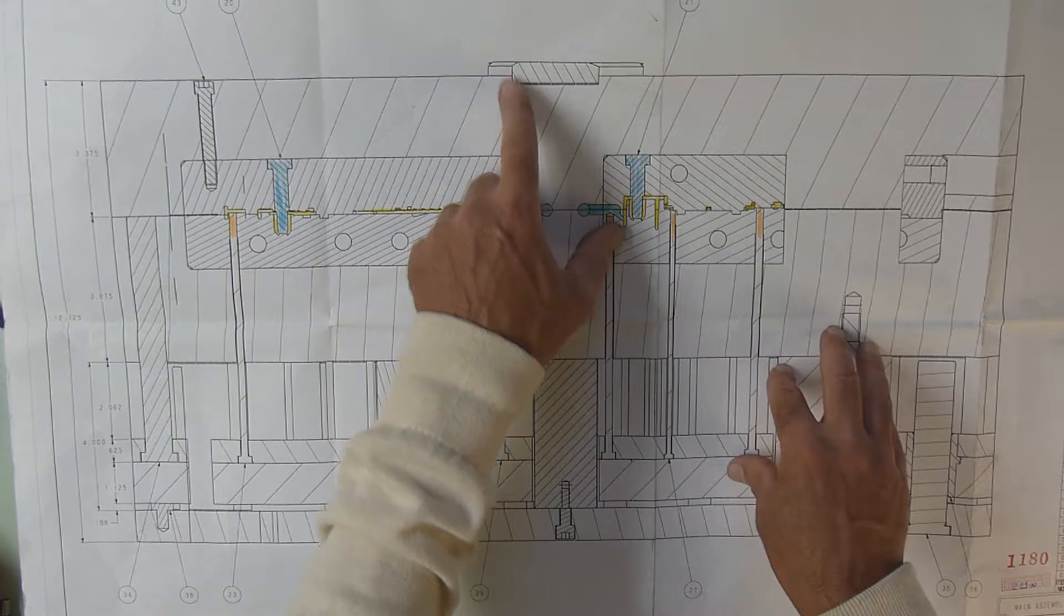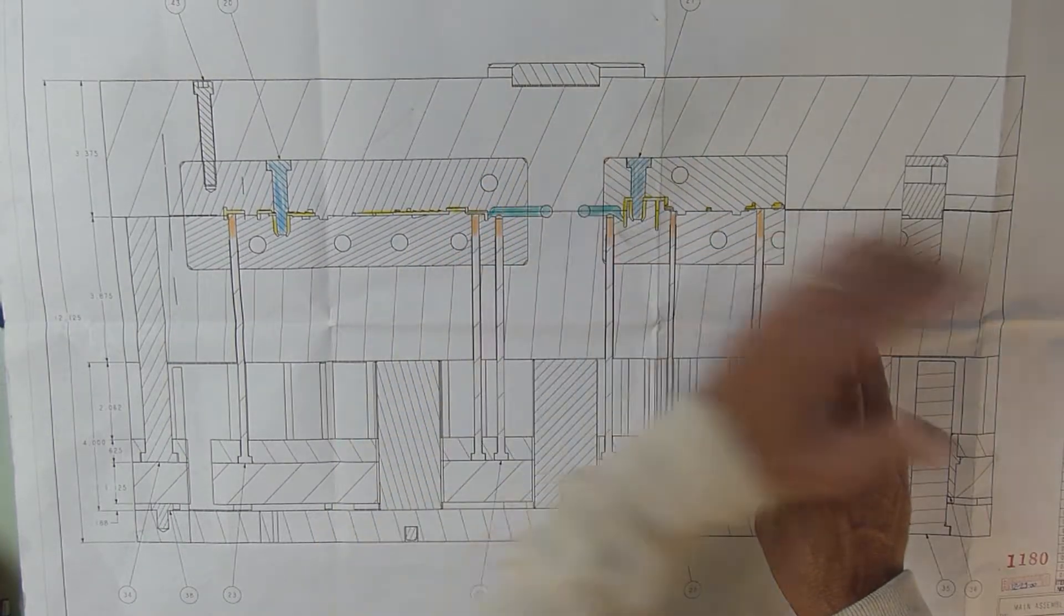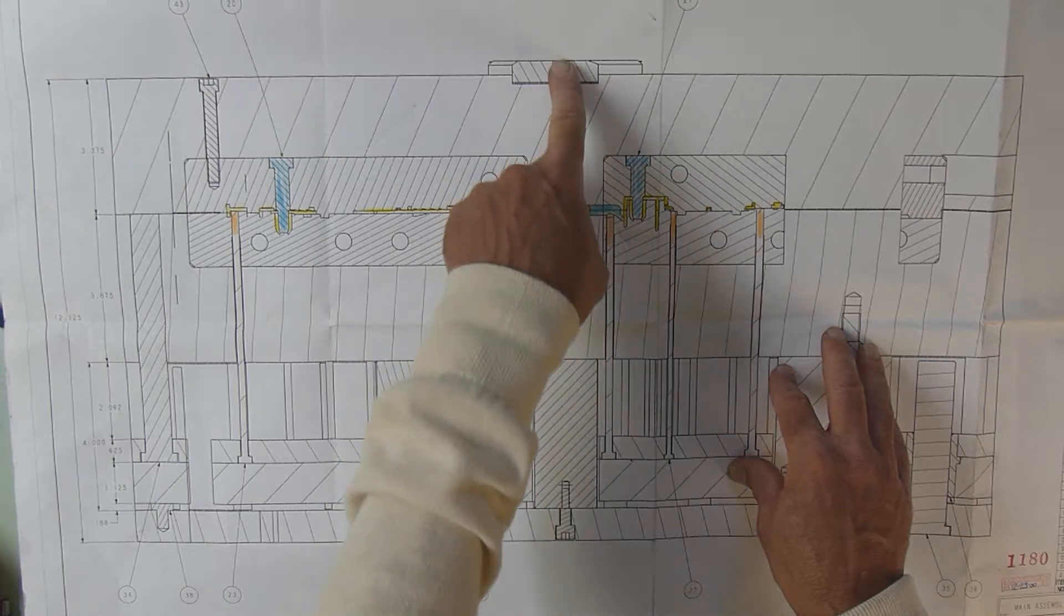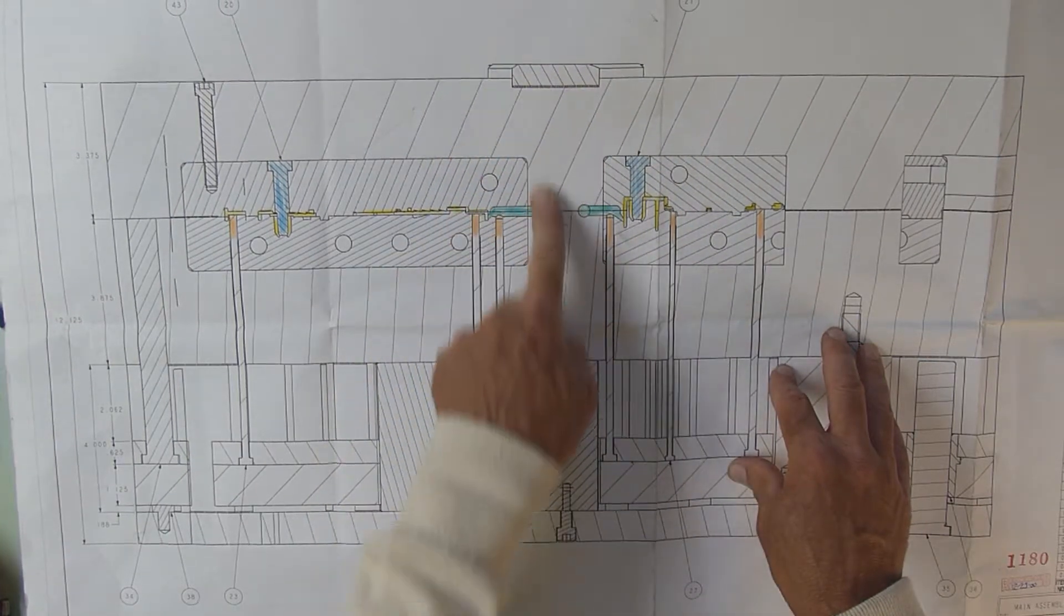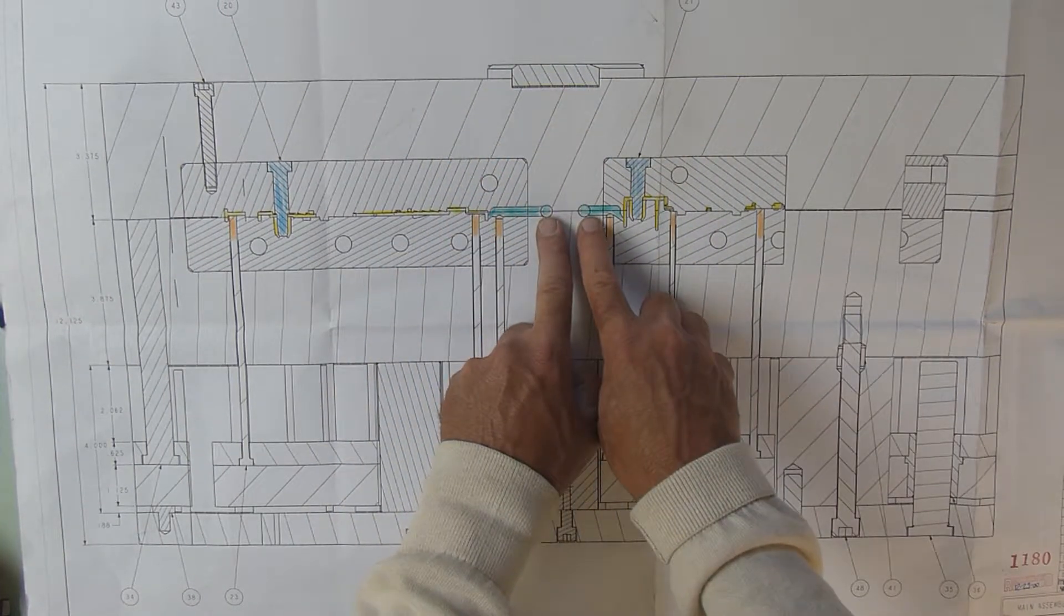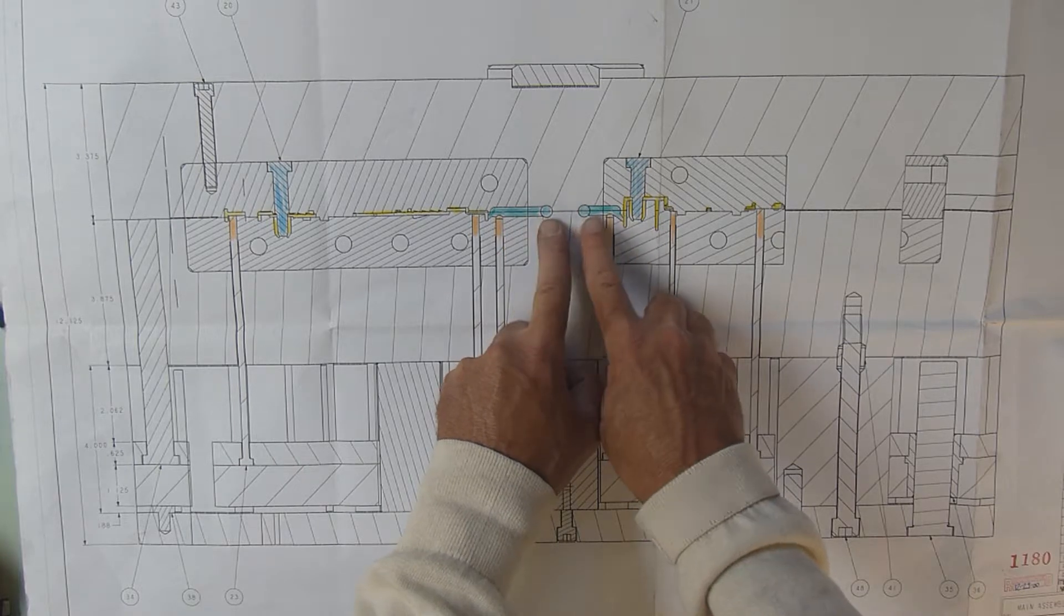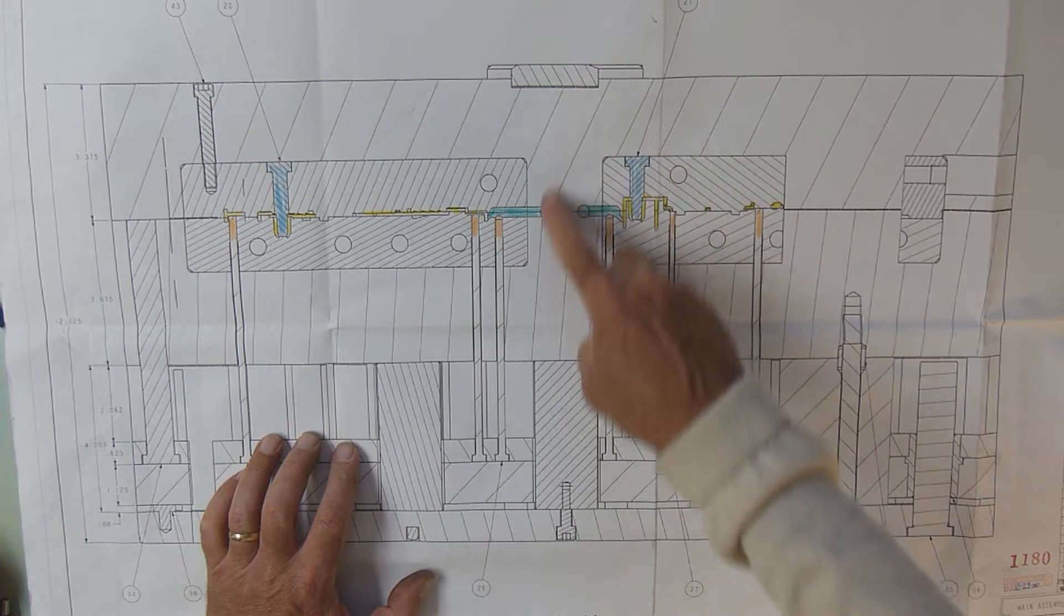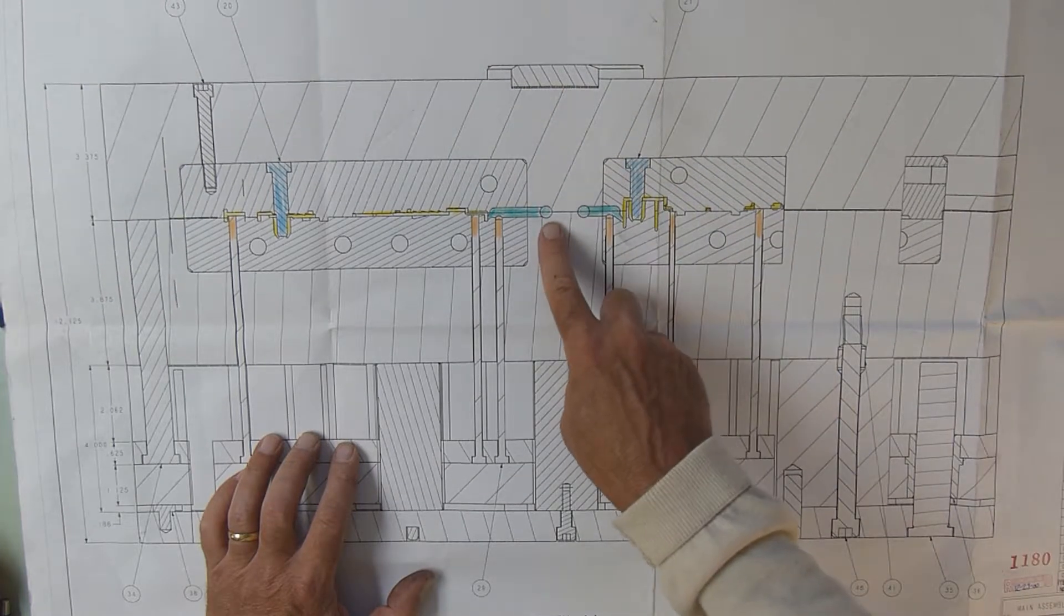Because of the way the section cut was done, it doesn't really show up, but this is where the plastic will come through the press down into these round runners—and these are runners. You can see the plastic comes down and goes into a set of runners.